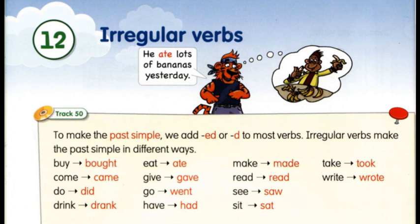Я навела вам приклад із минулим часом чоловічого роду: писав, купував, приходив. Але у минулому часі може бути будь-який рід, дивлячись яка особа виконує дію. Наприклад: she bought – вона купила. They bought – вони купили. I bought – я купив чи купила. He bought – він купив.